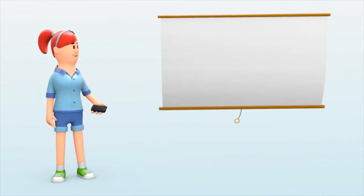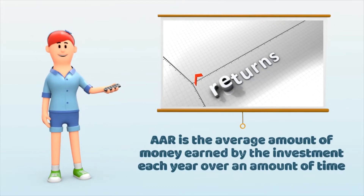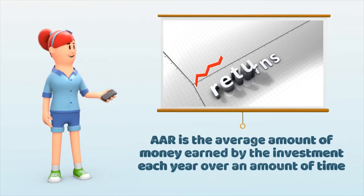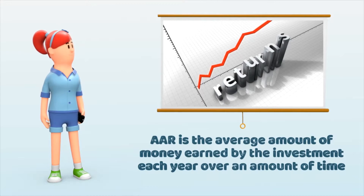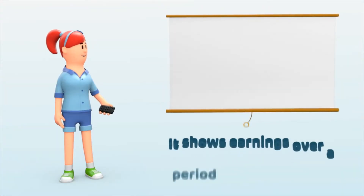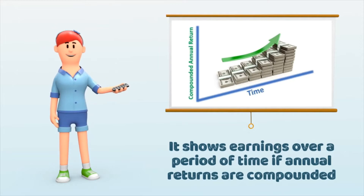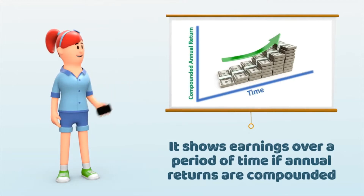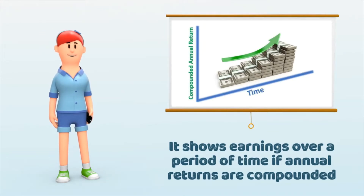Average annual return is the mathematical average amount of money earned by the investment each year over a given period of time. It is calculated as a geometric average to show what an investor would earn over a set period of time if the annual return was compounded.